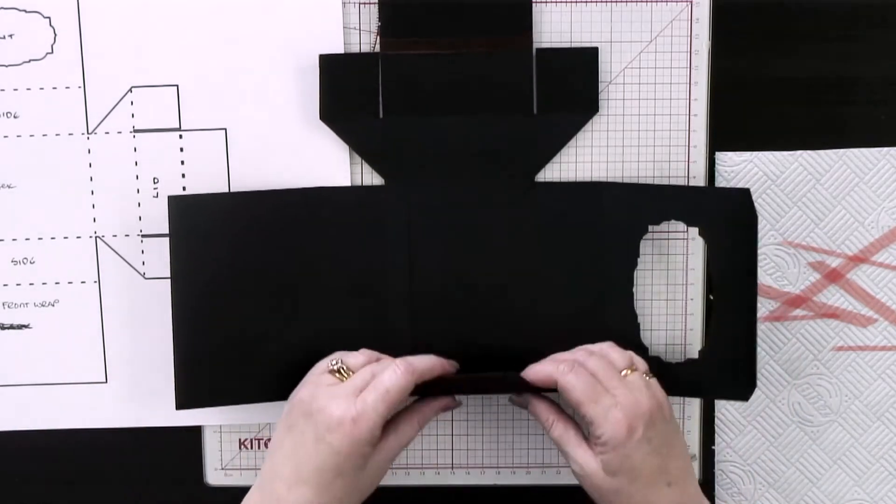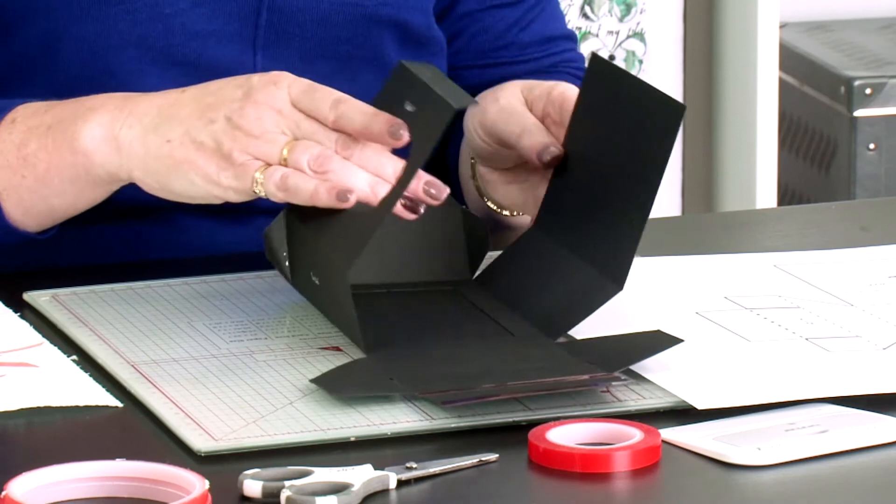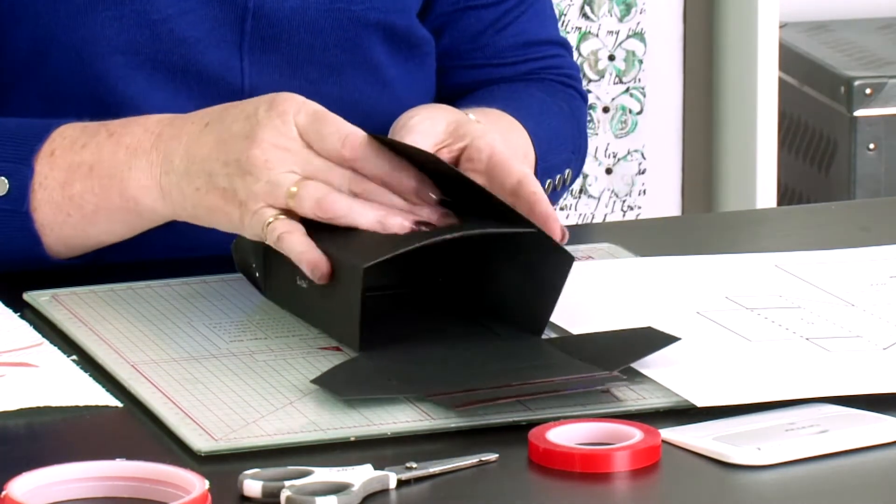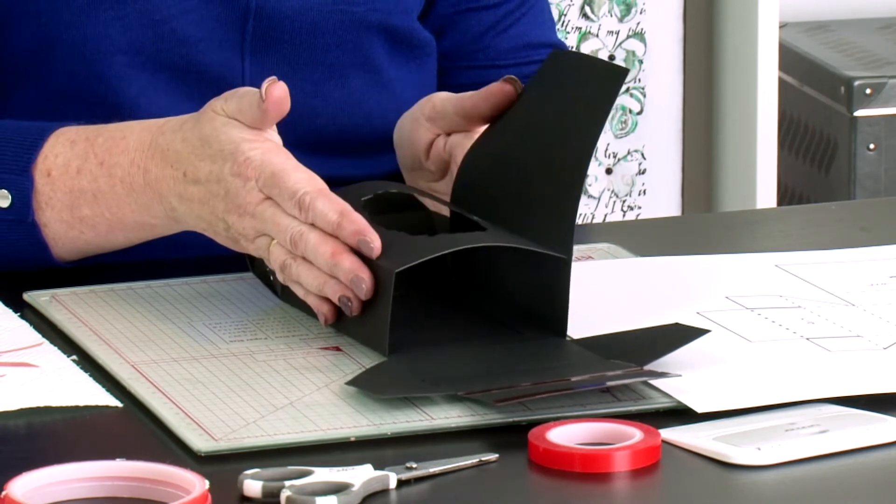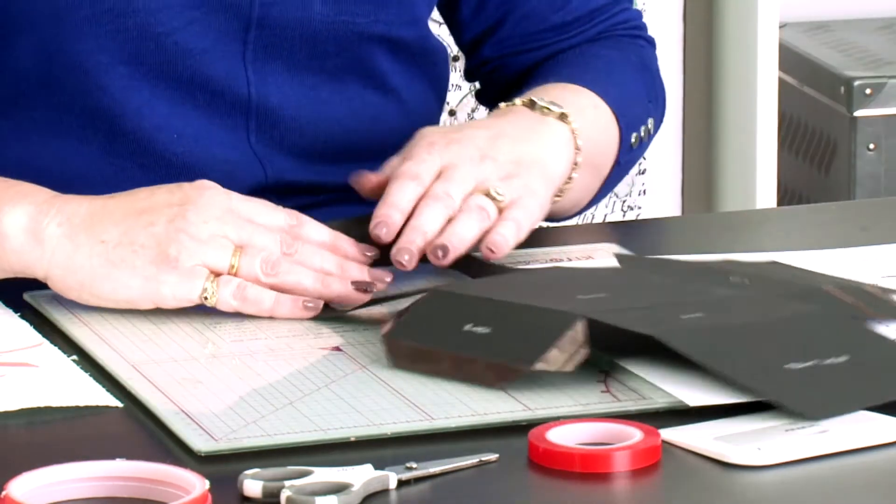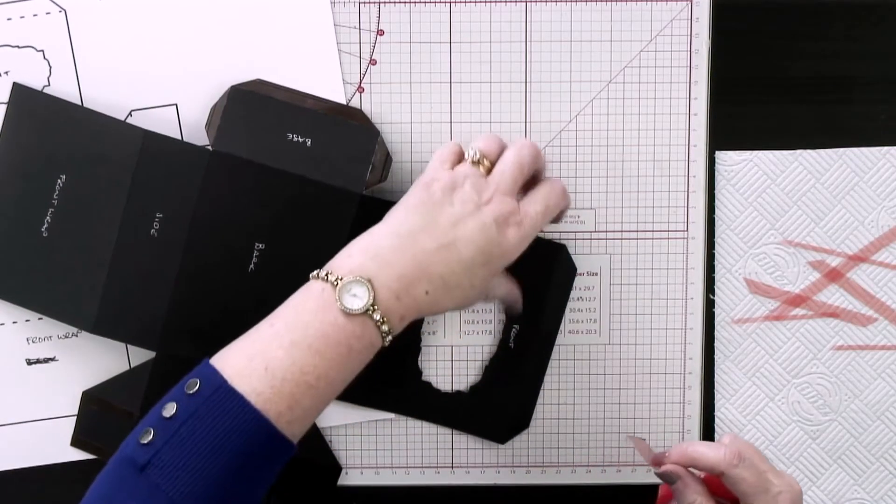The wrap folds out and then that all folds in. If I fold these sides in, that tab there needs glue on and it's going to stick inside there. I need to turn this over. This is how I put my tape on and I'm going to take my red liner tape.